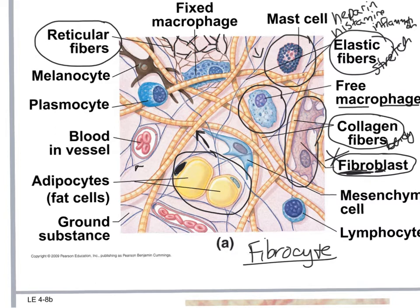So this is typical connective tissue proper — there are all sorts of specialized cells, all sorts of protein fibers, and the ground substance in between is like a sticky, syrupy type of fluid.